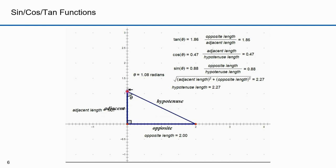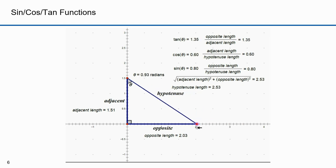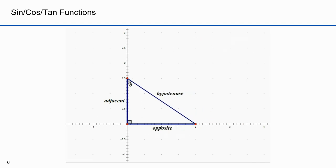I can change the angle theta by changing the length of the adjacent side. I can also change the angle theta by changing the length of the opposite side. The only thing that must remain constant is the angle of the origin — it always has to be 90 degrees. As I change the angle, the lengths of the three sides of the triangle change and thus the cosine, sine, and tangent function values change. These are the basic trigonometric functions.